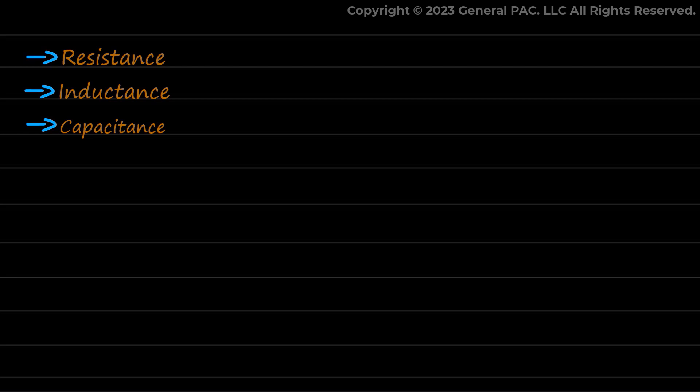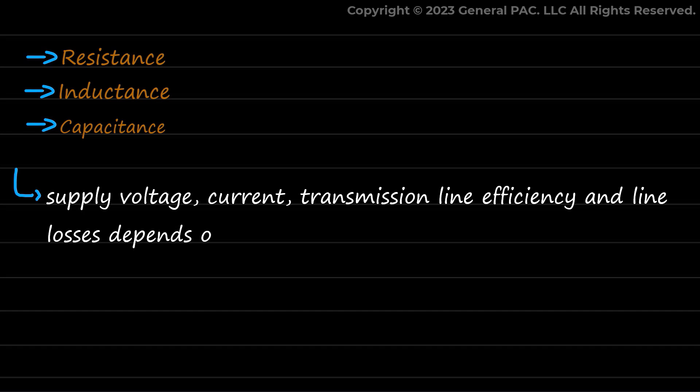These constants are important because the supply voltage, current, transmission line efficiency, and line losses depend on these parameters.